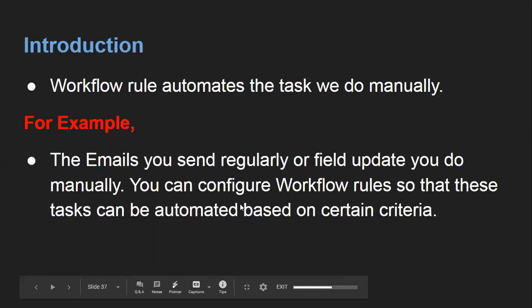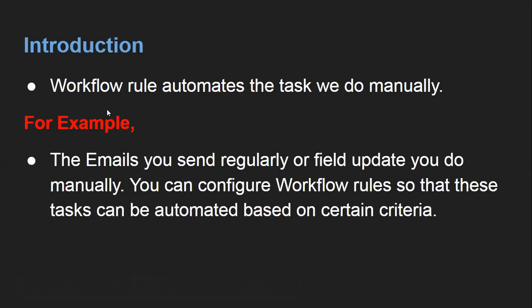First of all, an introduction to workflow rules. Workflow rules automate the tasks we do manually. Whenever you create or edit any record, and after creation or modification of any record, you do some tasks that are done manually. You can automate those tasks with the help of workflow rules. For example, the emails you send regularly or field updates you do manually — you can configure workflow rules so that these tasks can be automated based on certain criteria.